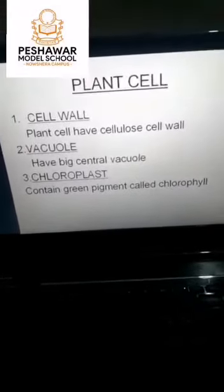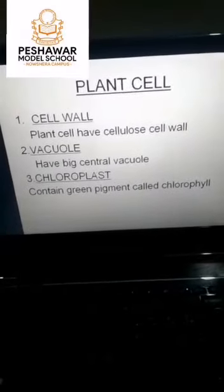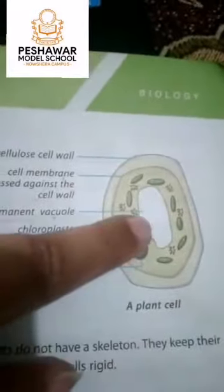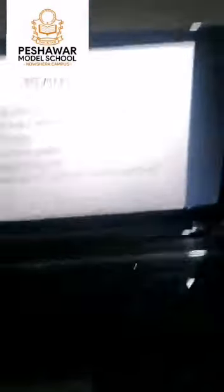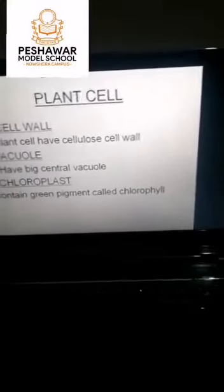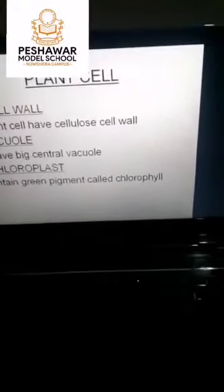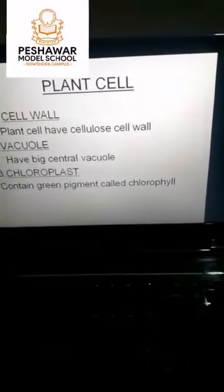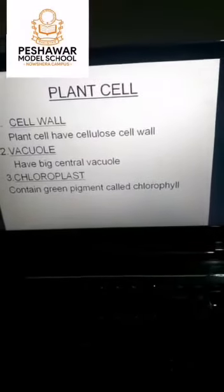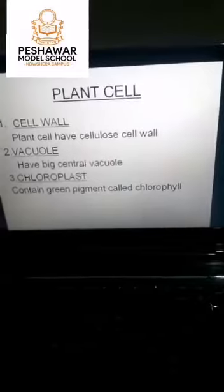The second organelle present in plant cells is the vacuole. Plant cells have a big central vacuole. The vacuole is present in the center of a plant cell and contains a solution made up of sugar and salt. This solution helps keep the plant rigid.